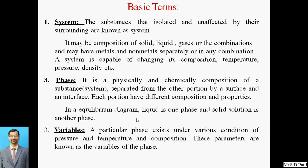The next term is phase. What is the meaning of phase? Phase is a physically and chemically distinct composition of a substance — that is the system — separated from other portions by a surface or interface, where each portion has different compositions and properties. In an equilibrium diagram, liquid is one phase and solid solution is another phase. So when plotting the equilibrium diagram, there are two phases present: one is liquid and the second is solid.